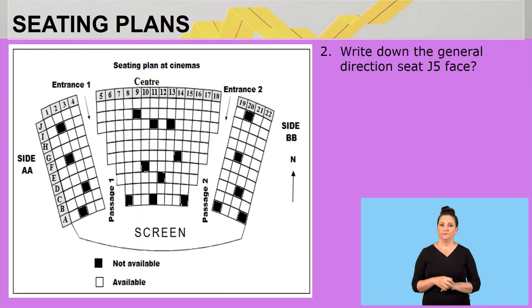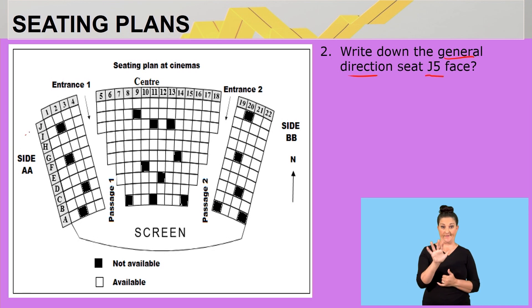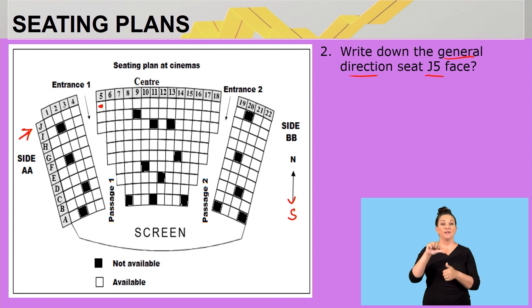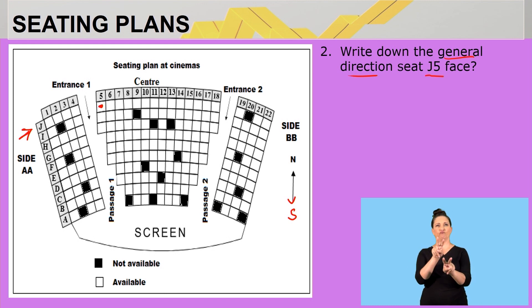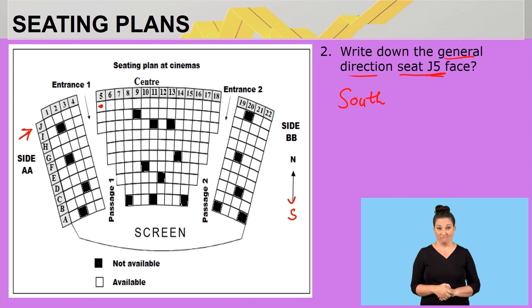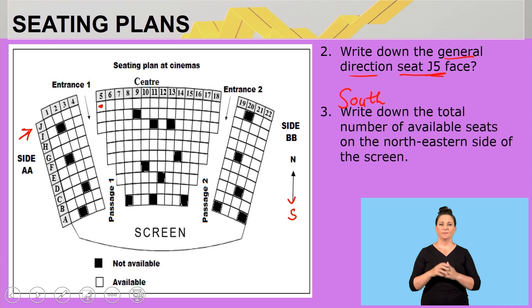Question two: write down the general direction seat J5 faces. Row J — we agree on that — and we look for seat 5, so it's this seat here. Remember, north is facing upward, so south will be the opposite direction. You must put yourself in this seat: which way will you be facing whilst sitting in seat J5? You'd be looking at the screen, so therefore seat J5 will be facing south.